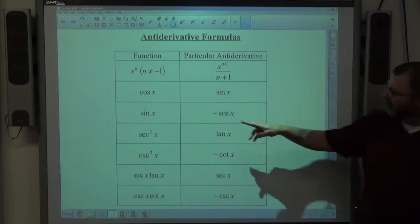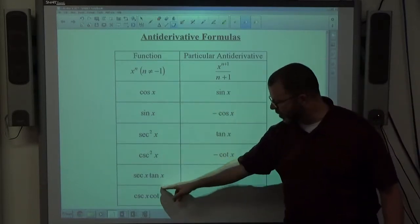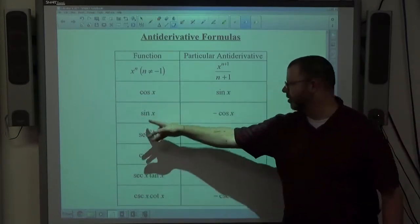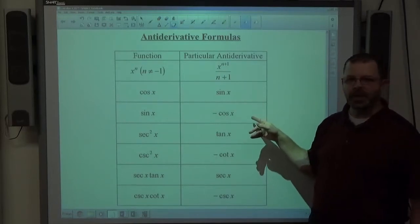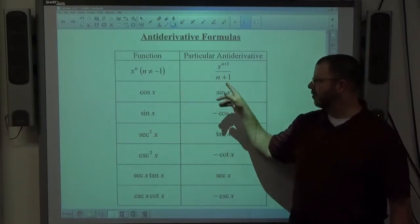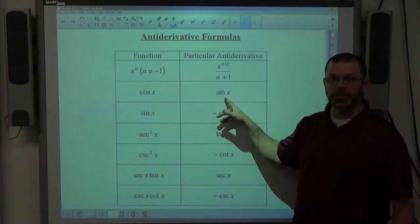Basically you get all six of your trig derivatives. These are the actual derivatives, this is what they came from. So cosine came from sine, right? So the derivative of sine is cosine.